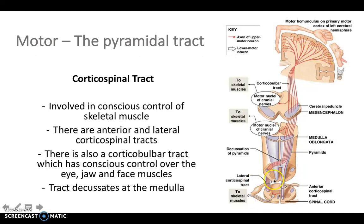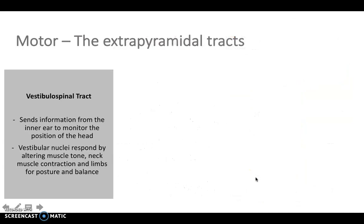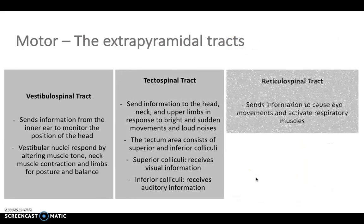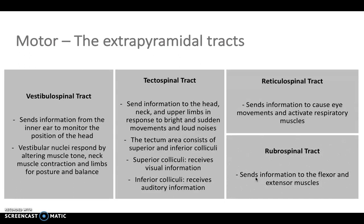This is really important in terms of clinical relevance: if we have a lesion in one of the tracts, where the lesion occurs determines where the motor loss will be. The extrapyramidal tracts are made up of the vestibulospinal, the tectospinal, the reticulospinal, and the rubospinal tract, and these each have their own individual functions.